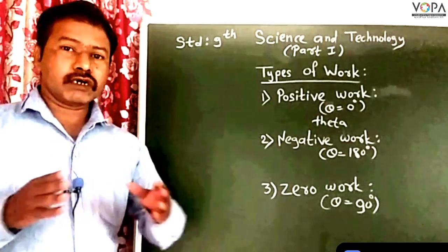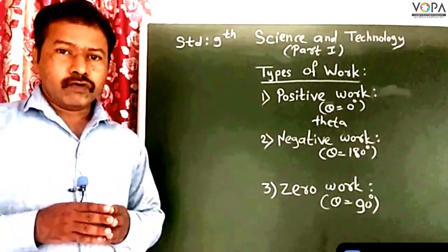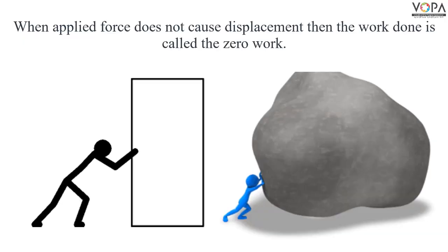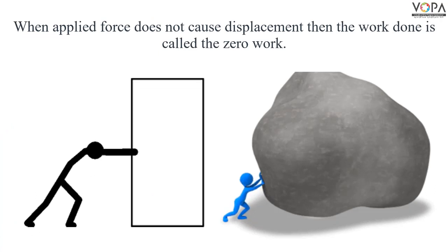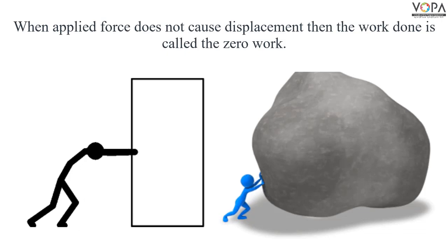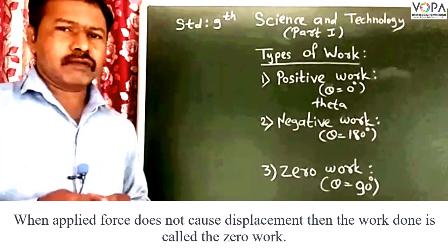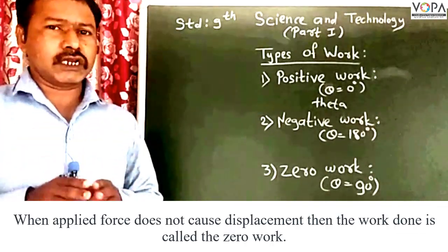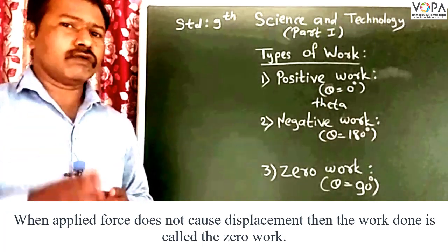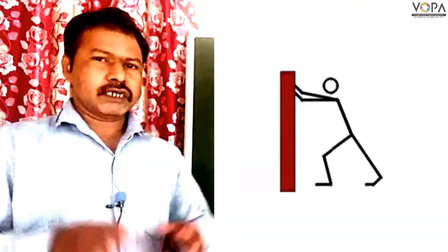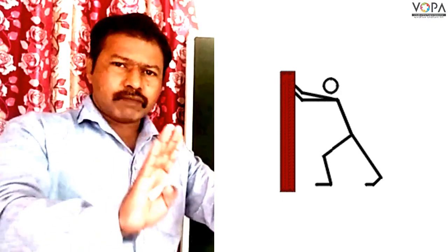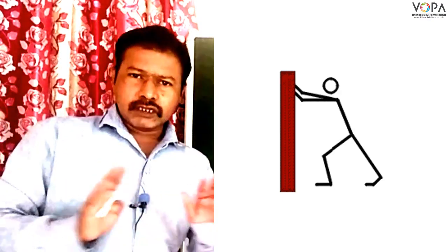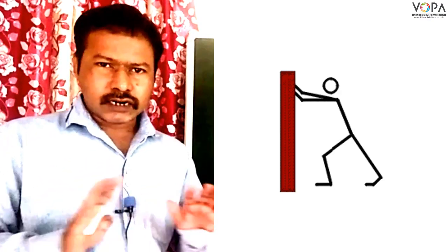Now the third type of work is zero work. Work done is said to be zero when the applied force does not cause any displacement. A simple example: if you apply a lot of force on a wall, the wall will not move, so no displacement occurs and the work done is zero.